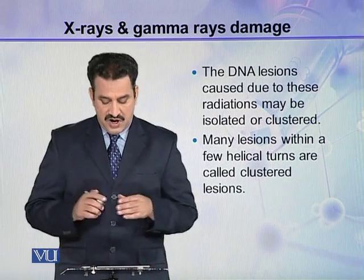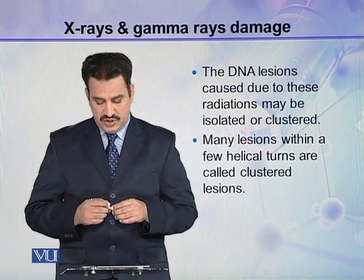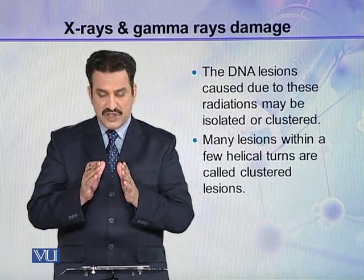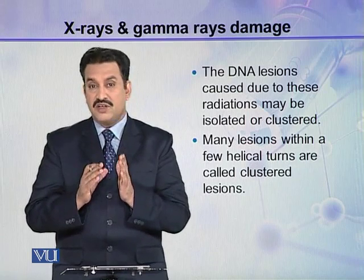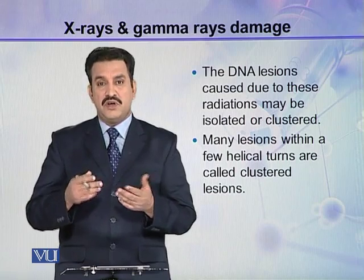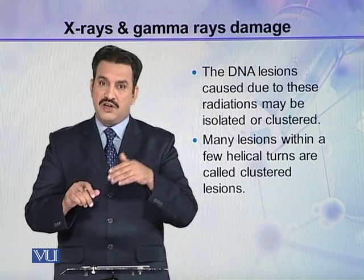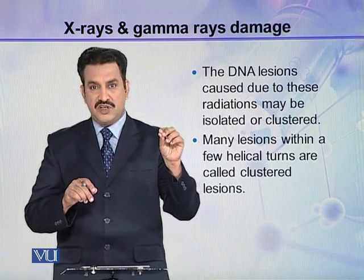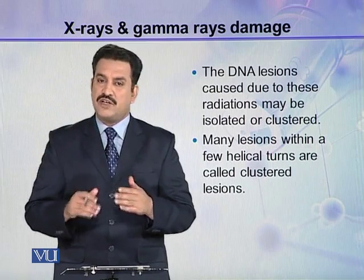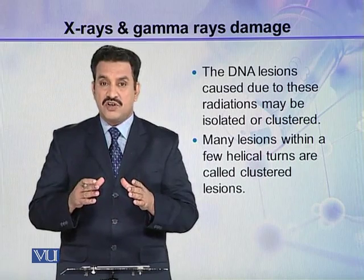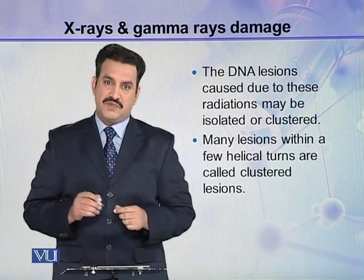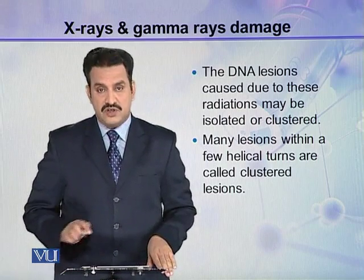The DNA lesions caused by these radiations may be isolated or clustered. Many lesions within a few helical turns are called clustered lesions. In isolated lesions, one lesion may appear here and the second lesion may be after some distance in the DNA helix, with the third lesion after some more distance. Such lesions are called isolated lesions. In clustered lesions, there are a number of lesions present within a few helices.